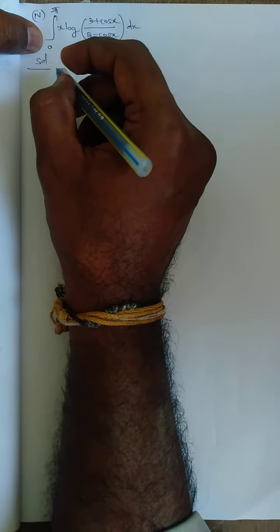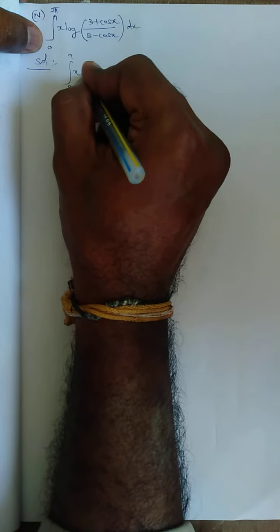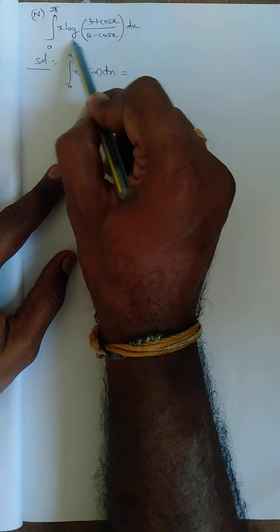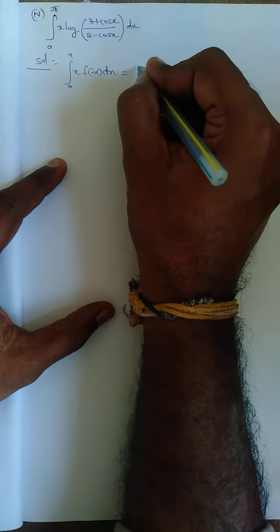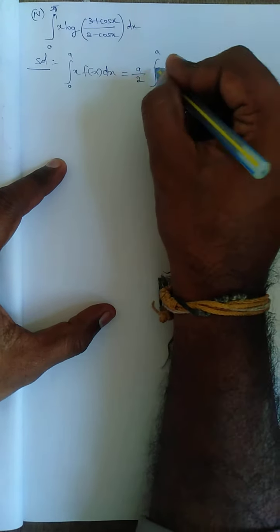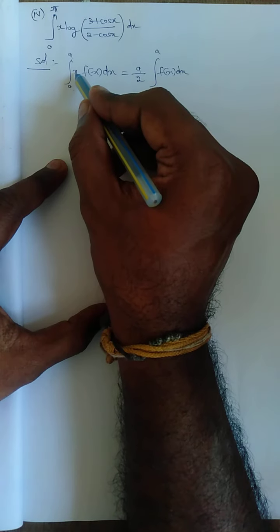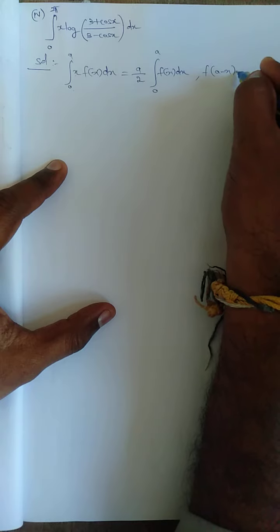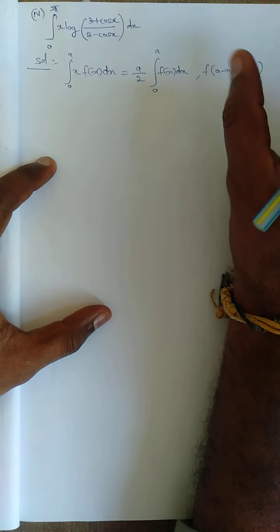The first property we are going to use: ∫₀ᵃ x·f(x) dx = (a/2)·∫₀ᵃ f(x) dx. The limit does not change — it stays 0 to a — but I divide by 2, giving a/2 outside. This applies under one condition: f(a-x) must equal f(x). This is one of the best conditions you need to study.